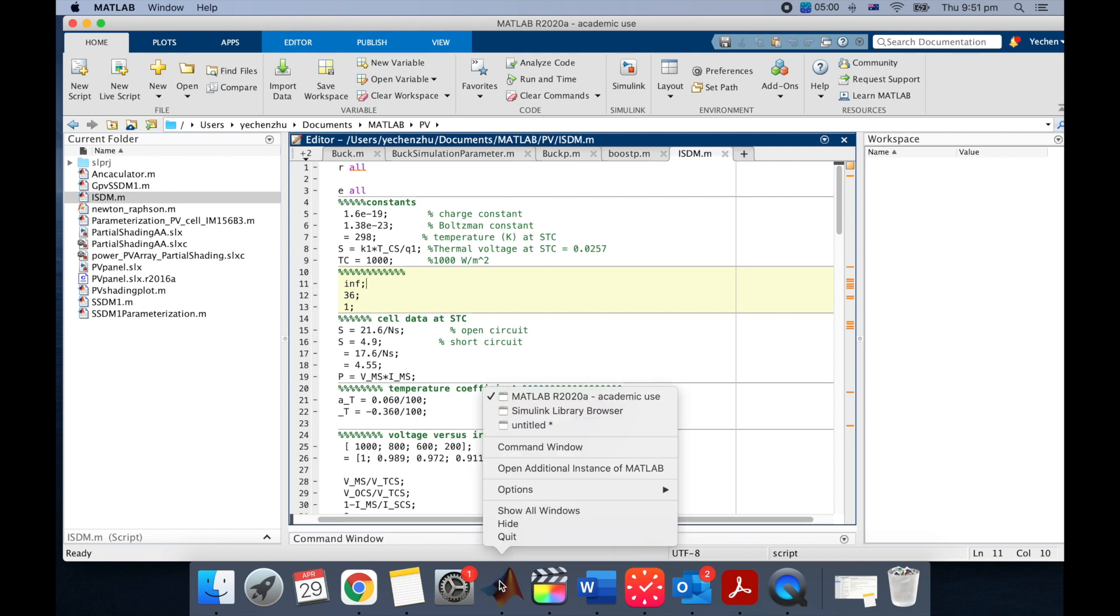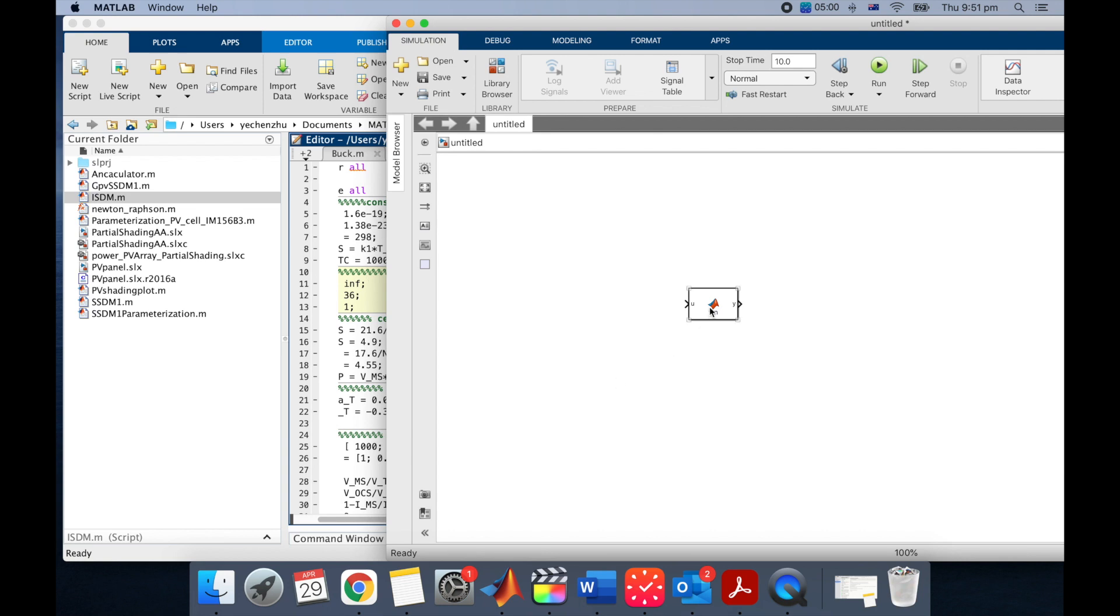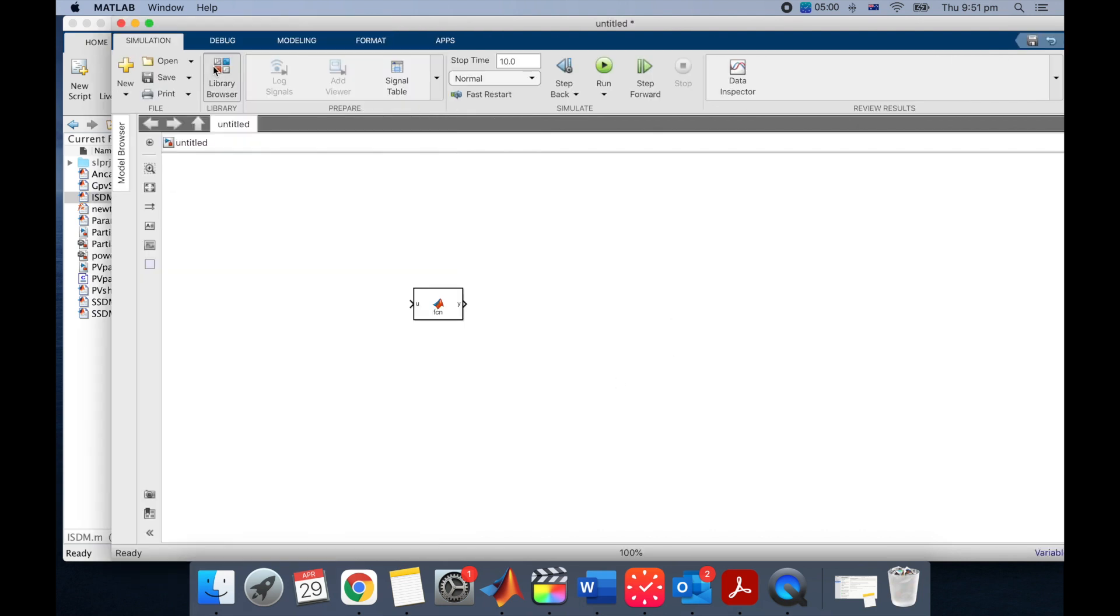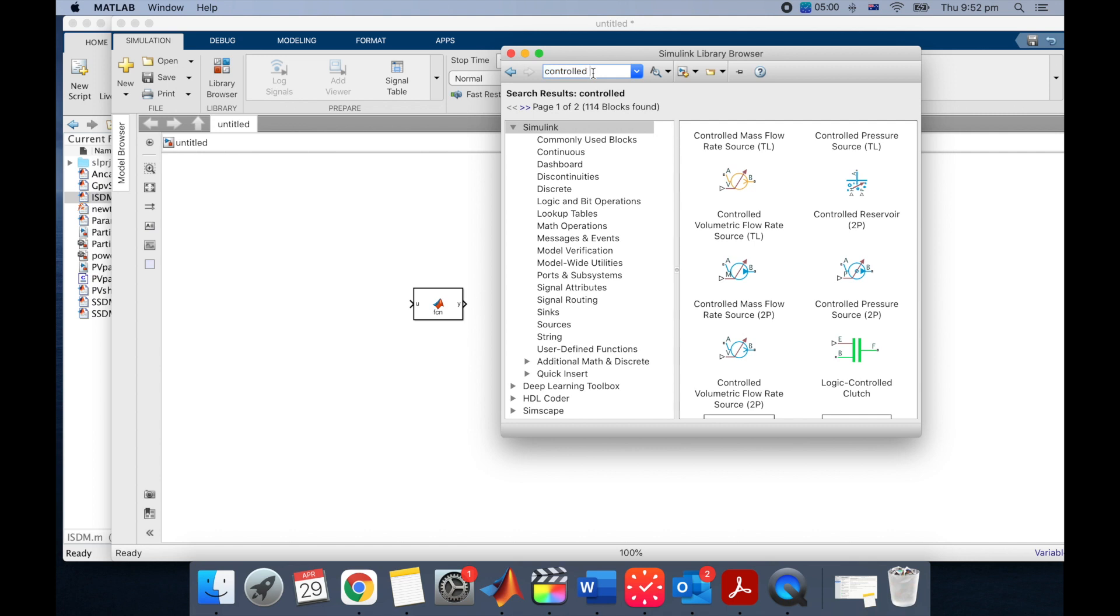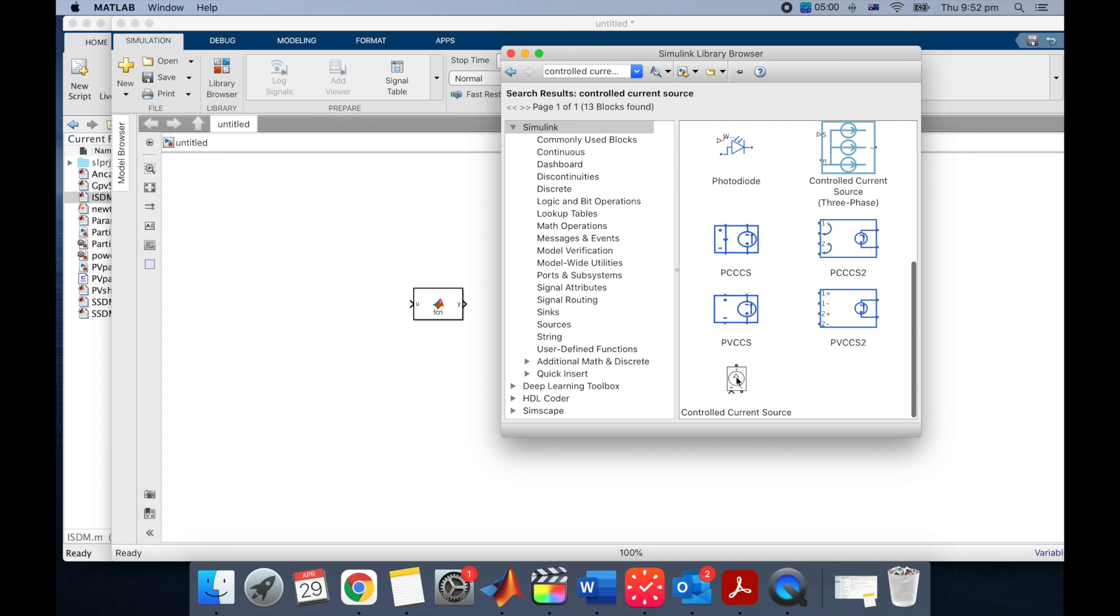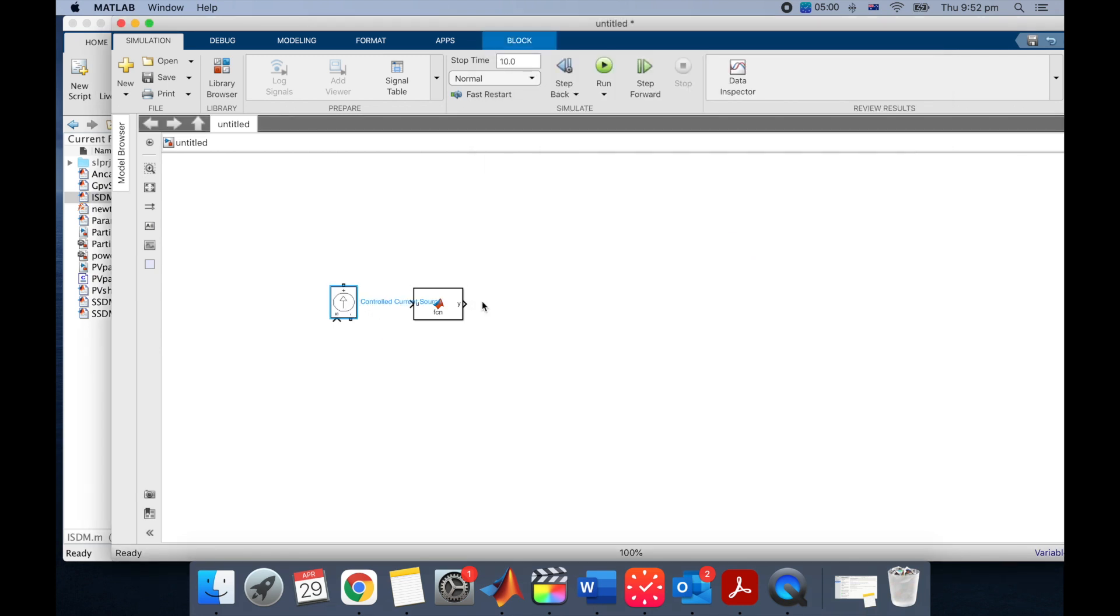To put the current value back into your circuit, what you need to do is you need to use this controlled current source. So you put your calculation value back to this controlled current source and connect this current source to your circuit. Then you can have a self-built PV model.